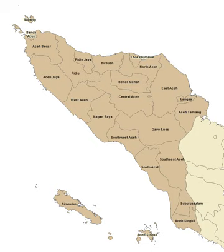Bupati had been regional lords under the pre-colonial monarchies of Java. When the Dutch abolished or curtailed those monarchies, the Bupati were left as the most senior indigenous authority. They were not strictly speaking 'native rulers' because the Dutch claimed full sovereignty over their territory, but in practice they had many of the attributes of petty kings, including elaborate regalia and palaces, and a high degree of impunity.